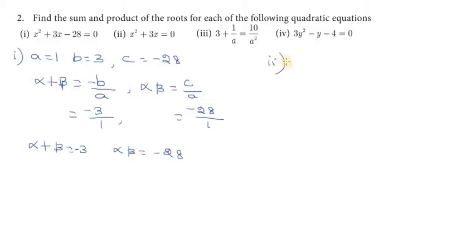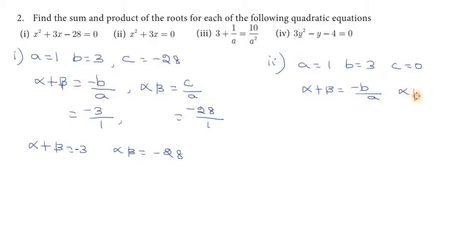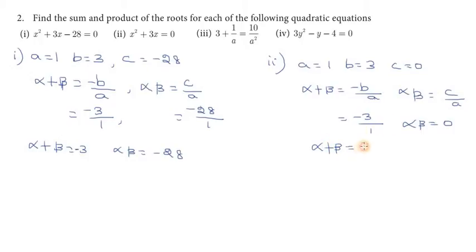Second substitution problem. You want the a value equal to 1, b is equal to 3, c is equal to 0. So we substitute: alpha plus beta is equal to minus b by a, and alpha into beta is equal to c by a. So alpha plus beta is minus 3 by 1, which is minus 3. Alpha into beta is 0 by 1, so sum value is minus 3 and product value is 0.